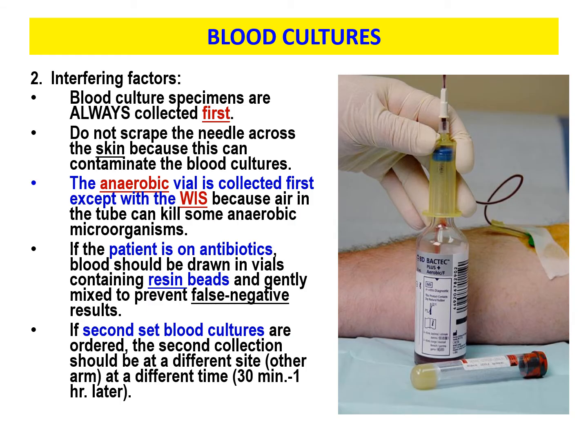Now let's talk about interfering factors. The yellow sun in our flower picture represents blood cultures — whether you're drawing them in an appropriate yellow-top tube or in a set of blood culture bottles, which you can see collected using a winged infusion set and vacutainer holder. We always draw blood cultures first, regardless of whether they're in bottles or in the yellow-top tube. You do not want to scrape the needle across the skin, as this can contaminate the blood cultures.